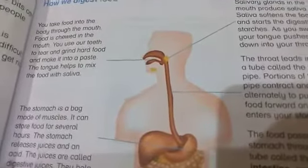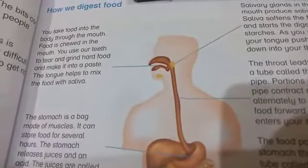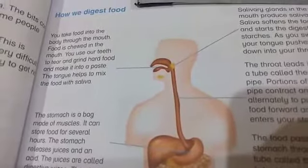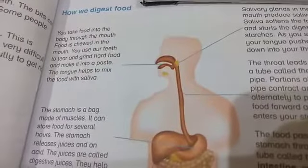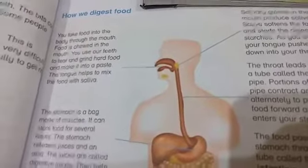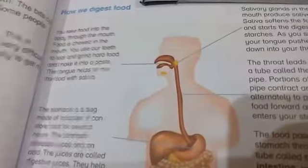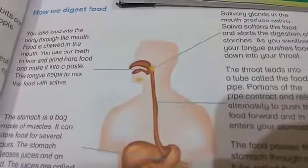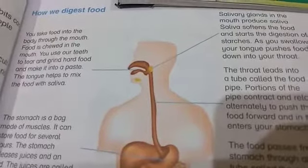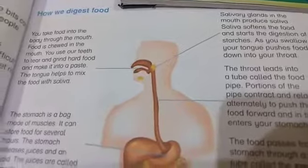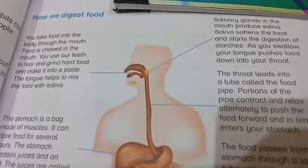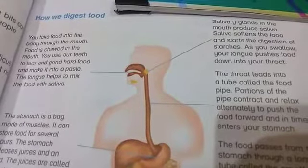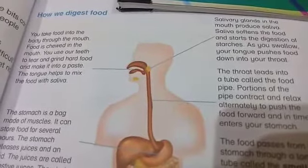The first step in digestion of food is the entrance of food by the mouth. In the mouth, teeth and tongue are found. The teeth help to tear and grind the food and make it into a paste, and the tongue helps to mix the food with the saliva. Saliva is a liquid that is produced by the salivary glands in the mouth.